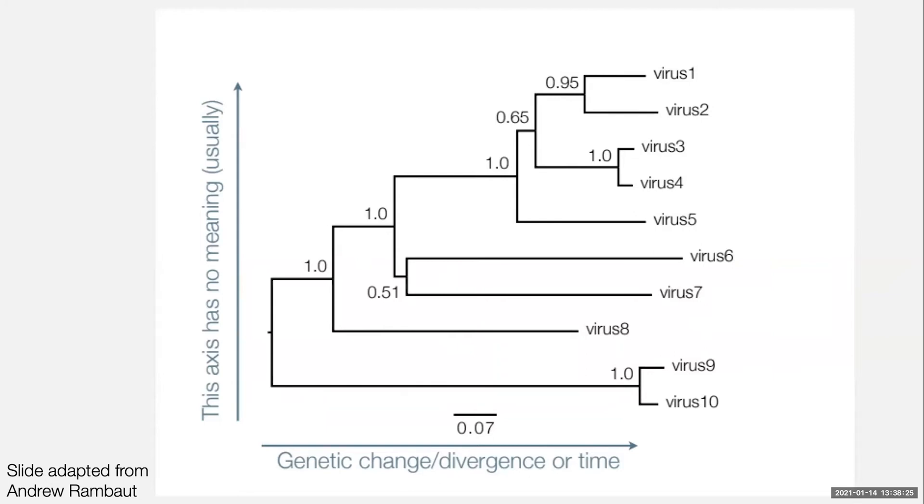We'll start with the axes. In this type of phylogenetic visualization, which is a very common one and quite an easy to understand one, the vertical axis usually has no meaning. So that means that you could flip virus one and two around the node, and it wouldn't change anything about how we interpret the tree.